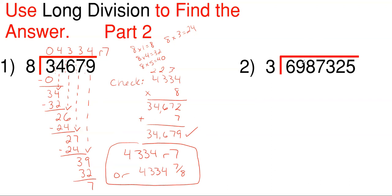All righty. Moving on to the second one, we have a much larger number here, but it's going to be the same procedure overall. Long division is considered to be long because the longer the number you have, the longer it takes to find that answer. But it's the same process overall — you're just going to look at a single number dropping each time.